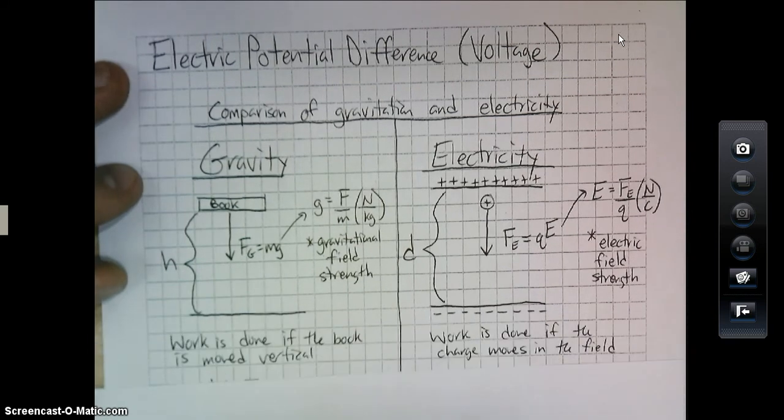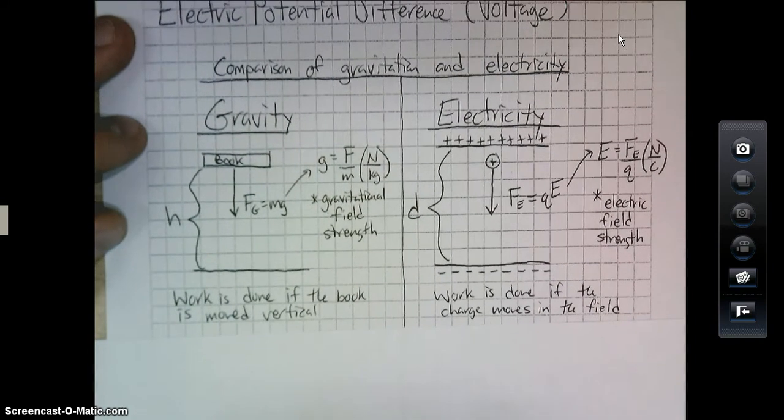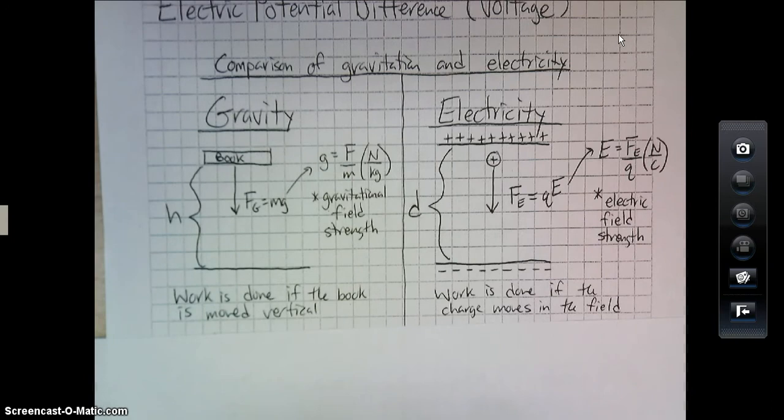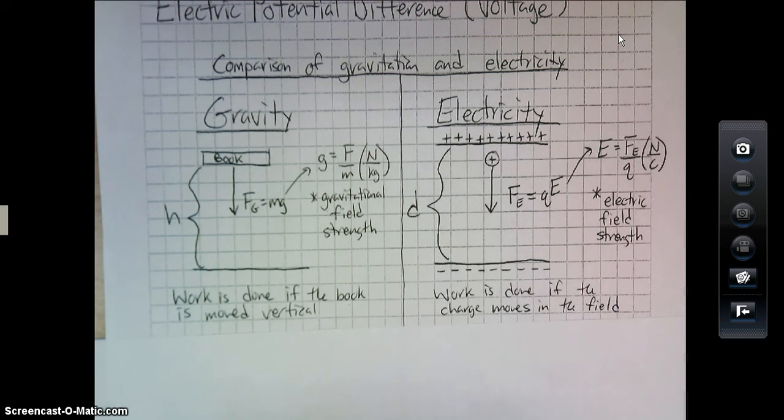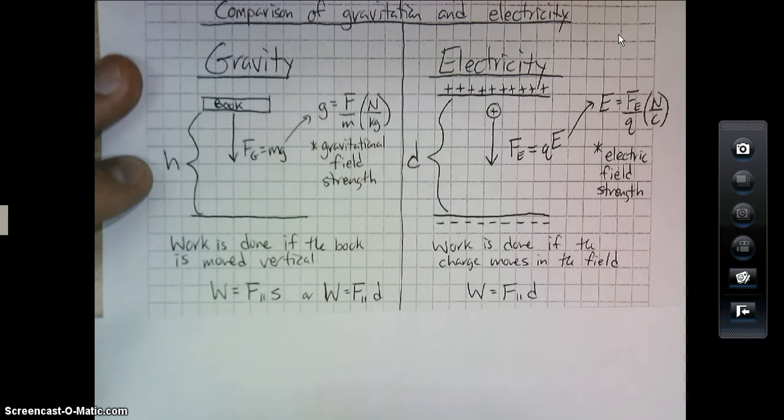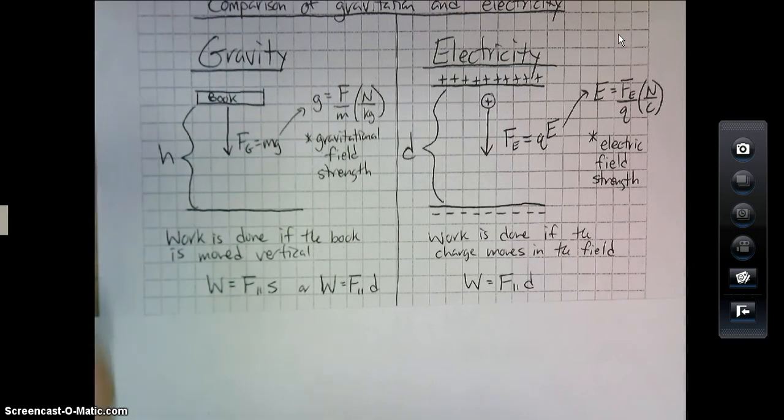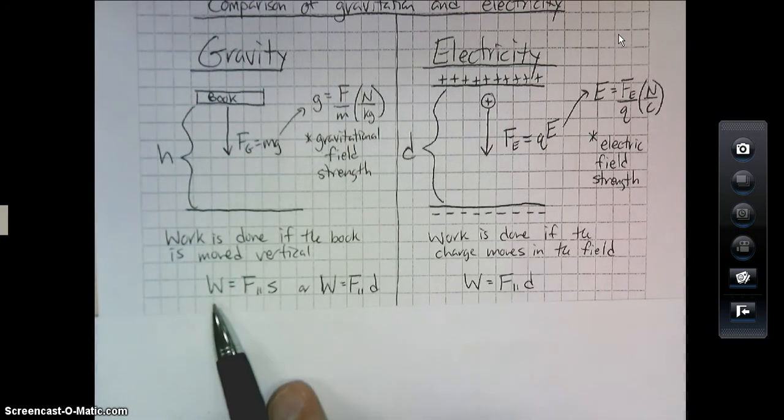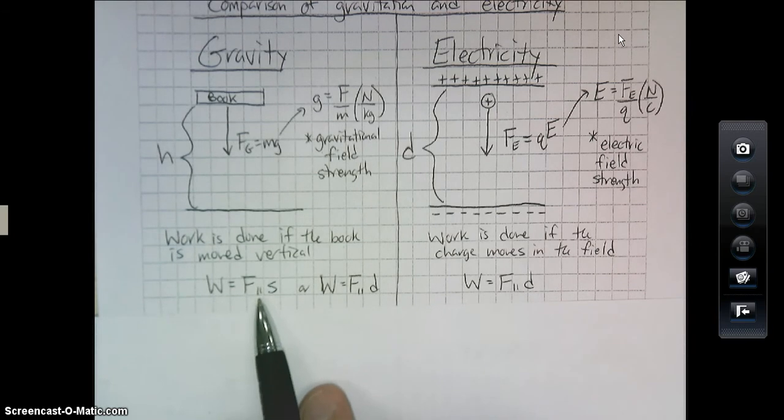All right. So let's talk about what happens when these objects move in their fields. Well, if a book moves vertically along the same direction of the gravitational field, we say that work is done. The same thing could be said about an object moving in an electrical field. If it moves in the direction of the field, then work is being done on that charge.